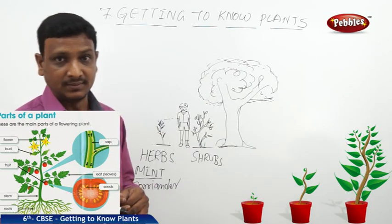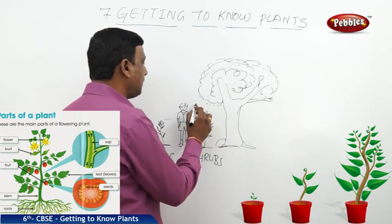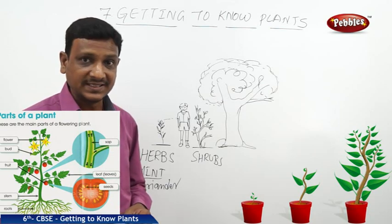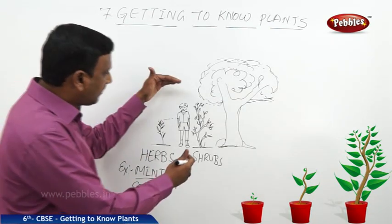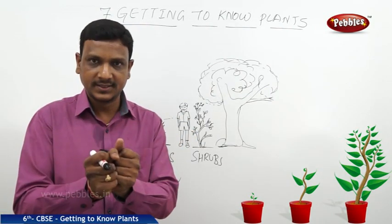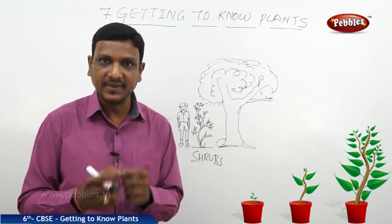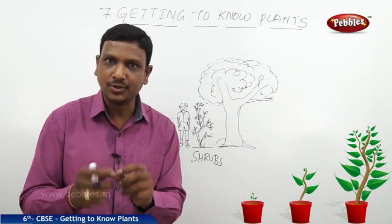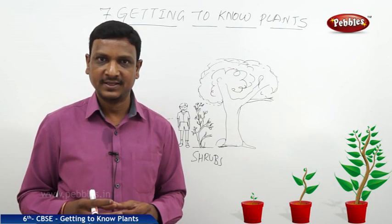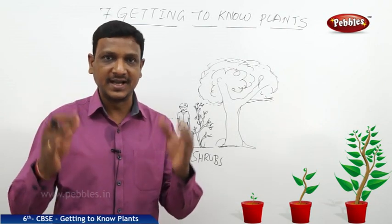Next we move to shrubs. What are shrubs? These are much bigger plants but they are not as big as a tree. Shrubs will be around your size, sometimes a little bigger than you, but their stems are hard. They are a bit taller than you, and the stems are very hard compared to herbs. In an herb the stem is very tender — applying a little pressure can break it — whereas in a shrub the stem is strong, though not like a big tree.